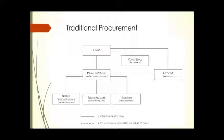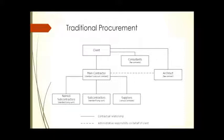Under the main contractor, there are three types of subcontractors. Domestic subcontractors are any subcontractors appointed by the contractor from their own choice. Named subcontractors are those who are named in the contract — for example, the client may specify that if you want to select cladding subcontractors, these are the names they would like to be involved, naming options A, B, and C in the contract.